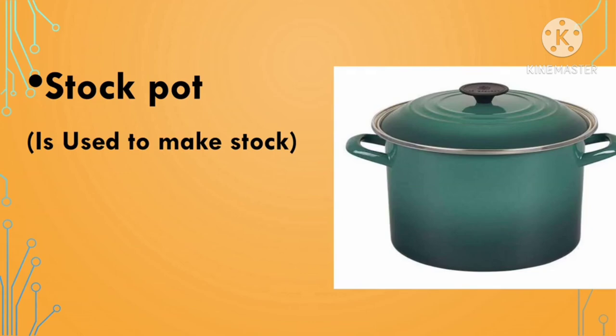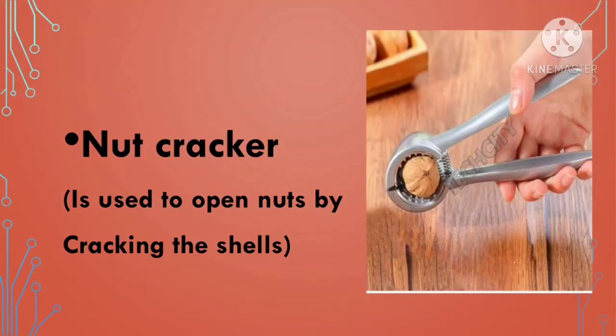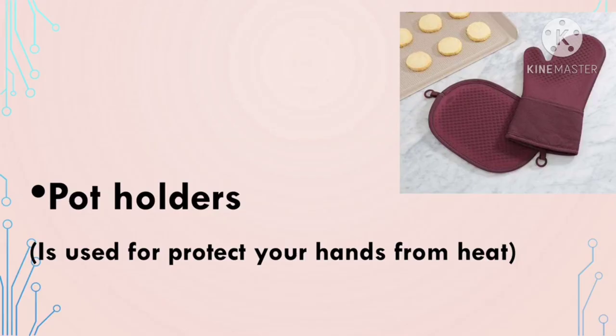Measuring spoon is used to measure the amount of ingredients. Nutcracker is used to open nuts by cracking the shells. Pot holders are used to protect your hands. Thank you.